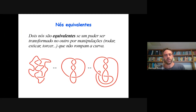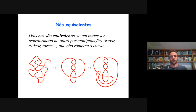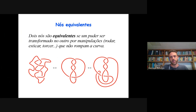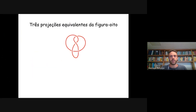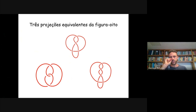Eu estou dando um exemplo de diagramas que representam o mesmo nó. O primeiro, a corda está só meio tremida, meio embolada. Se você esticar a corda direitinho fica esse nó do meio. E se você pegar um pedacinho aqui dessa corda, trouxer para cá e passar por debaixo dessa, é o que dá esse daqui — você pode desfazer isso e voltar para esse. Então esses três diagramas representam o mesmo nó. Aqui também estão três projeções equivalentes da figura 8 — eu convido vocês que pensem por que elas são equivalentes.